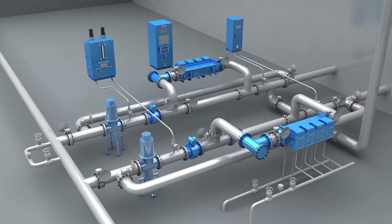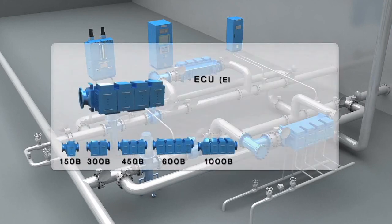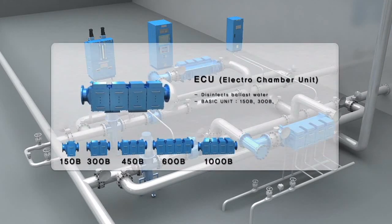The system includes ECU, ANU, PDE, and TSU. ECU is the main equipment for disinfection of ballast water.